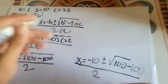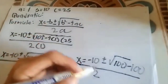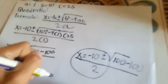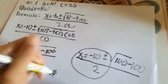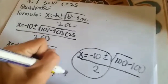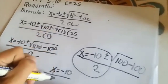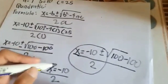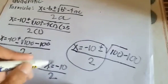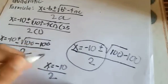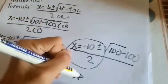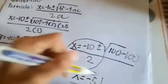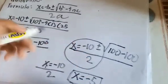100 minus 100 is equal to 0, so bring down this. X equals negative 10 divided by 2. Since this is negative, the answer is X equals negative 5. And that's the final answer using the quadratic equation formula.